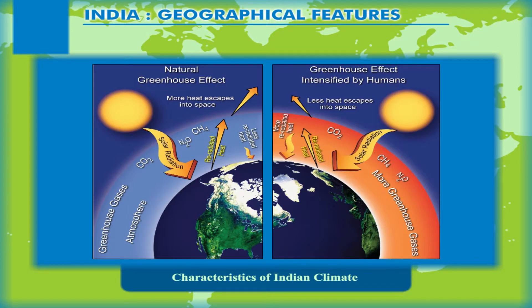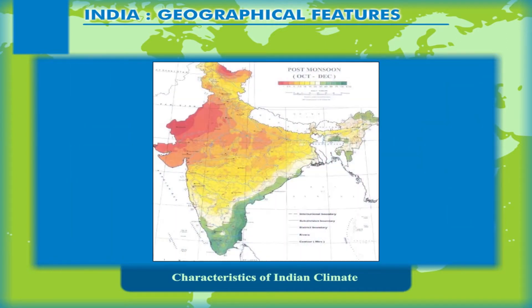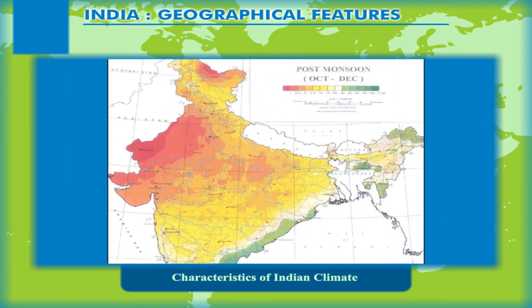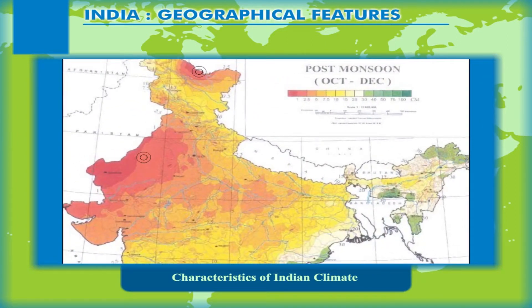As discussed earlier, several factors modify the climate of India, which has some contrasting characteristics. Temperature contrast: the areas to the north of the Tropic of Cancer have the continental type of climate, and the range of temperature is quite high.